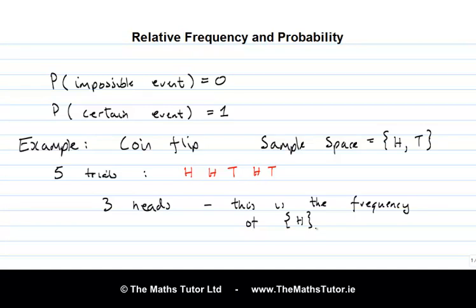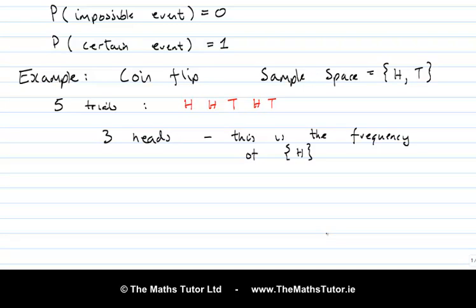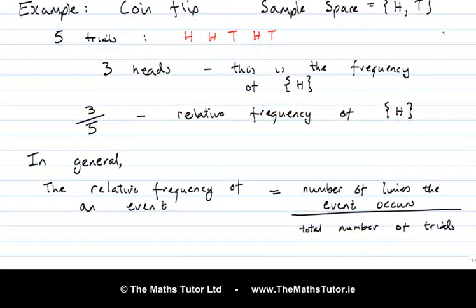The relative frequency is what we get by dividing that number by the total number of trials. So three divided by five is the relative frequency. So let's say what relative frequency is in general. The relative frequency of an event is the number of times that the event occurs, we could call that the frequency, divided by the total number of trials. So in the example above, the relative frequency of the event heads was three over five.